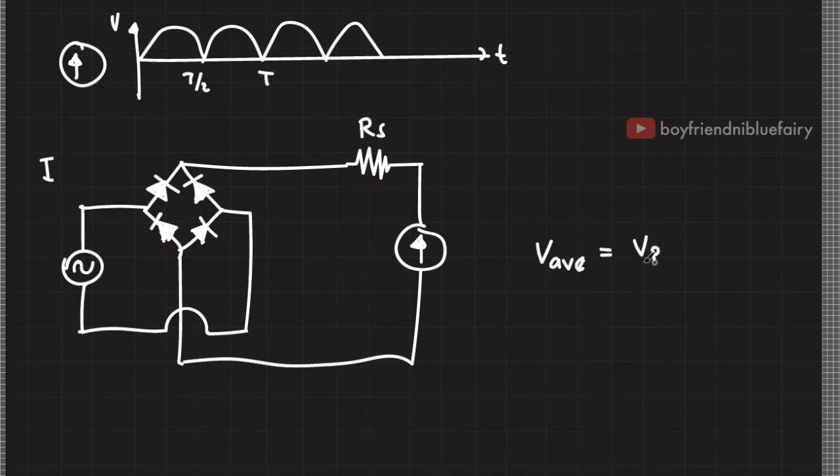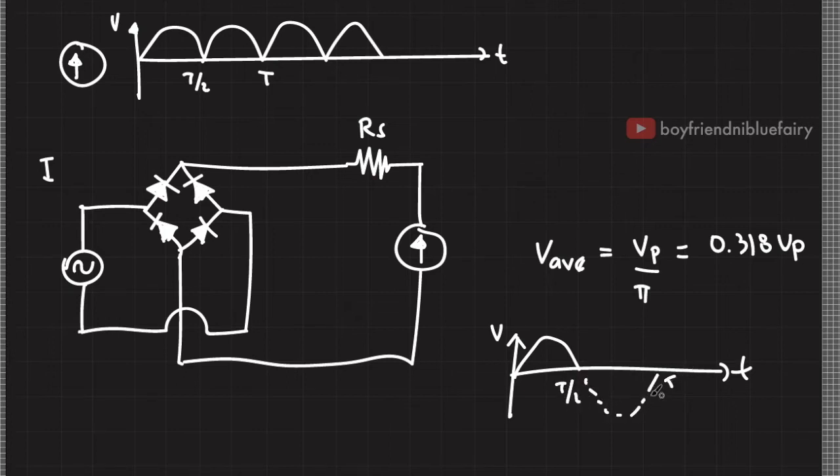Now recall our equation for half wave rectifier circuit for the average voltage that the galvanometer detects. This equation is based on the assumption that the only voltage signal that reaches the galvanometer is the first half cycle. And the second half cycle is actually truncated or blocked by the diode. And that's where we get this equation.